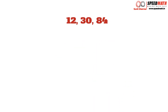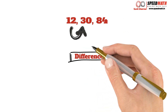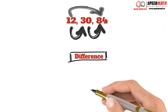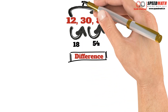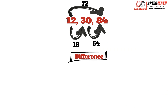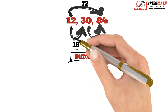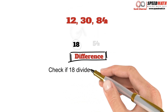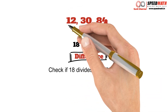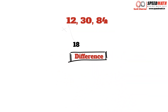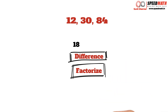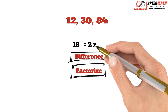Let's take another example: 12, 30 and 84. Step 1: find the least difference. Difference between 30 and 12 is 18, difference between 84 and 30 is 54, and difference between 84 and 12 is 72. The least difference is 18. Step 2: check if 18 divides all 3 numbers. Now it is very clear that 18 does not divide 12, so we are going to factorize 18.